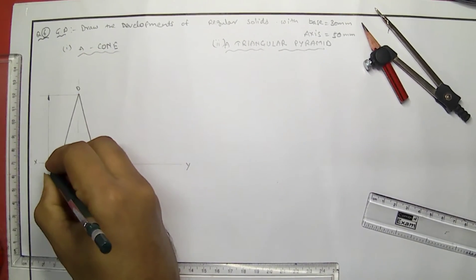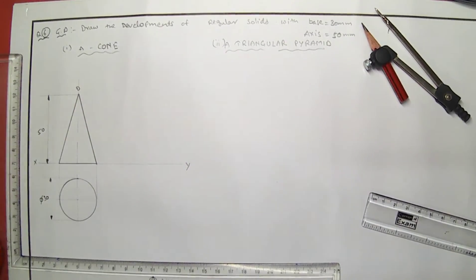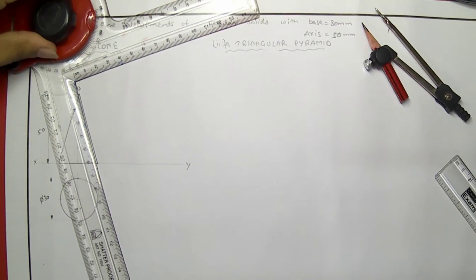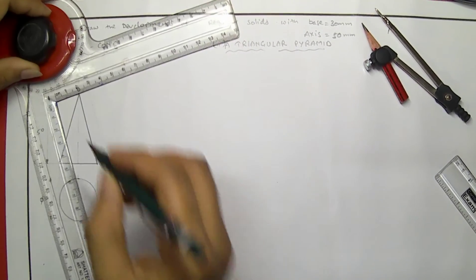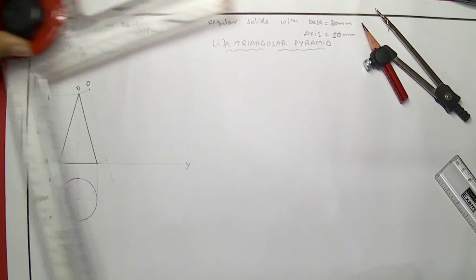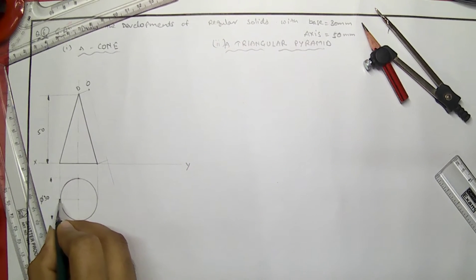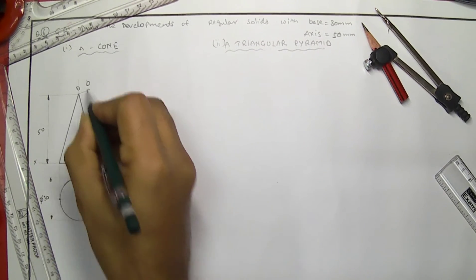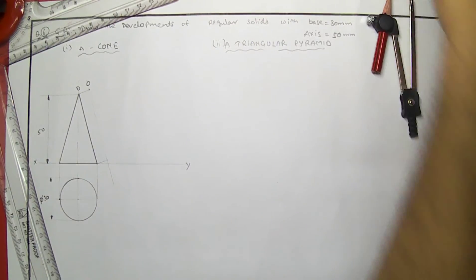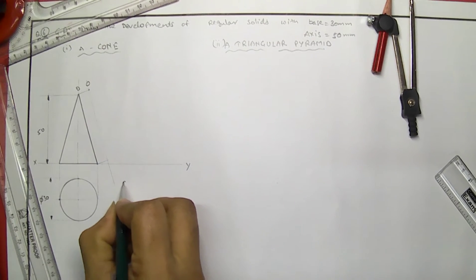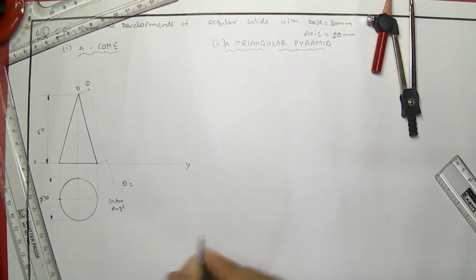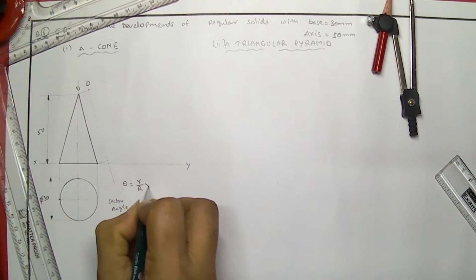Now we will go for simple developments. For the cone, we have to draw the parallel lines for the generators. This is capital O, and I am opening from here — this generator, this generator. So for getting the exact arc, we have to calculate the sectors. We have a small formula for theta, where theta is the sector angle. This sector angle is: small r divided by capital R, into 360 degrees.